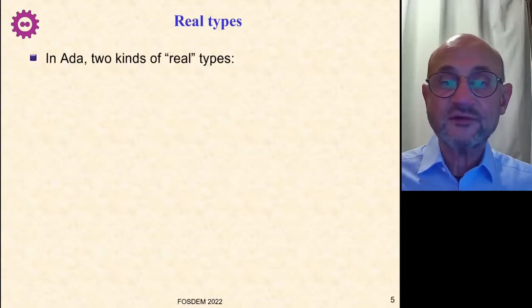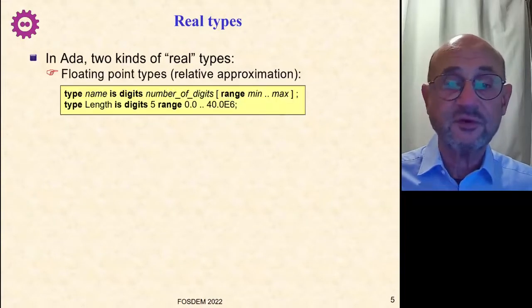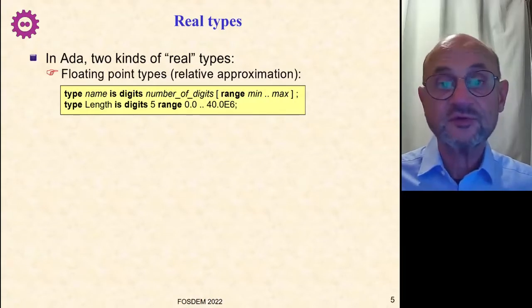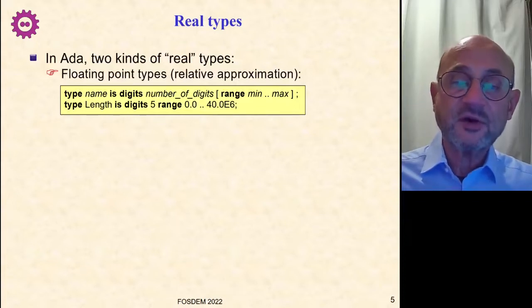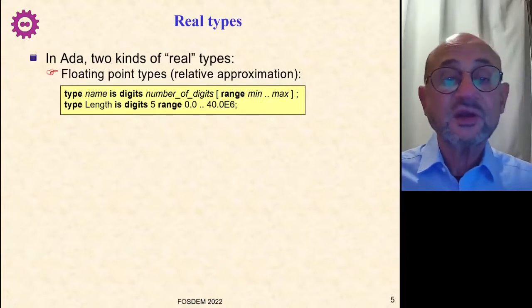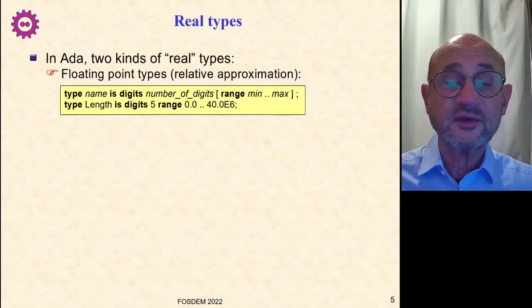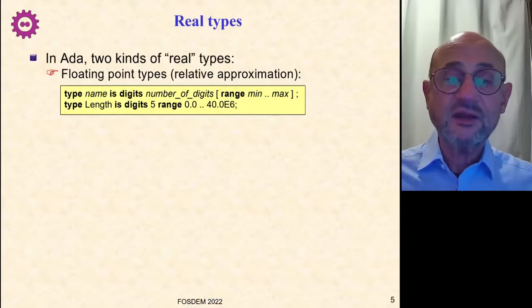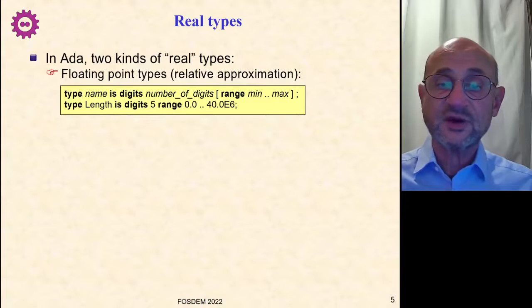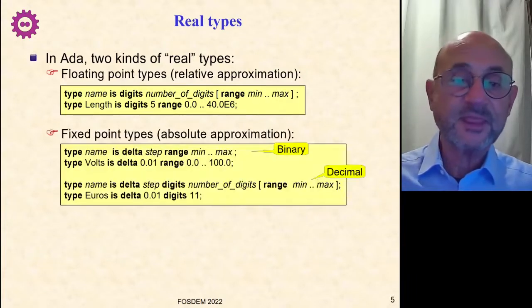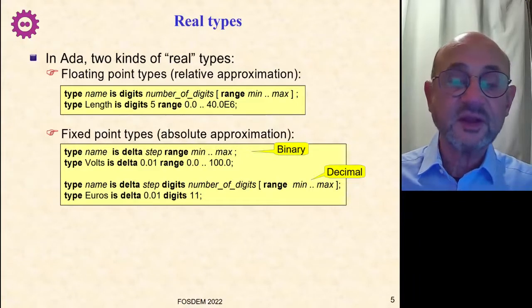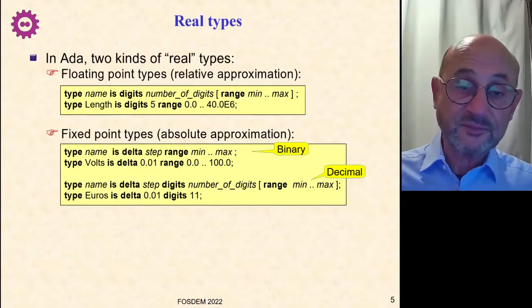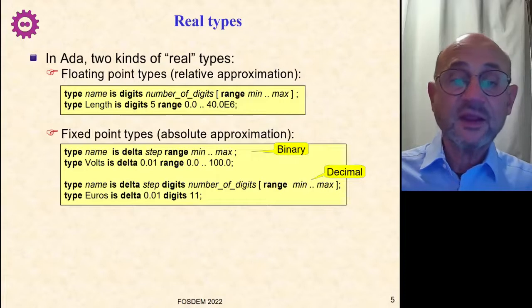Therefore, here in Ada, we have two kinds of real types. What we call real covers both the usual floating point type, the one that you know in most other languages. So this is a syntax, and you see that you give a type with the number of significant digits in decimal representation that you want. So for example, here, if I want to represent a length on the surface of the Earth, I need five significant digits. So it's an approximation of 10 to the minus 5 over the range from 0 to 40 exponent 6 meters.